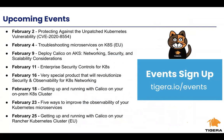We have some upcoming trainings: February 2nd, a talk on protecting against unpatched Kubernetes vulnerability CVE-2020-8554. February 4th in the EU time zone, troubleshooting microservices on Kubernetes. February 9th, deploying Calico on AKS — network security and scalability considerations. February 11th, enterprise security controls. And on February 16th, we're announcing a new product from Tigera that will revolutionize security observability for Kubernetes networking — definitely check in with us on the 16th. You can find all events at tigera.io/events.